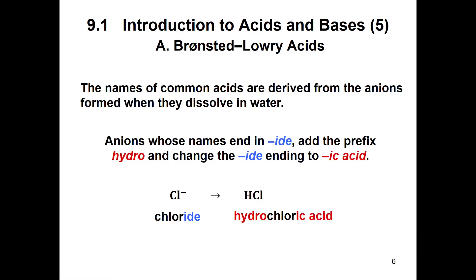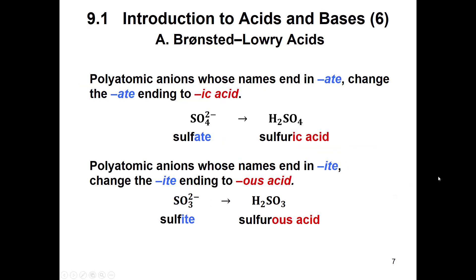The names of common acids come from the anions that are formed when they dissolve in water. Anions whose names end in -ide: you add the prefix hydro and change that -ide to -ic. So if it was named chloride it becomes hydrochloric acid. Polyatomic anions that end in -ate also become -ic, but you don't put hydro in front of it, so a sulfate would become sulfuric acid. If the polyatomic is an -ite then it's going to end in -ous, so sulfite would become sulfurous acid. So -ate equals -ic and -ite equals -ous.